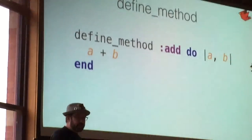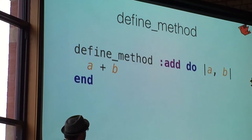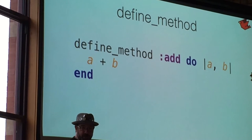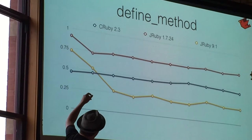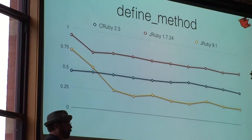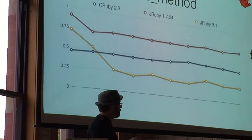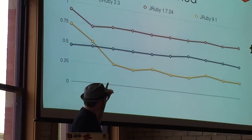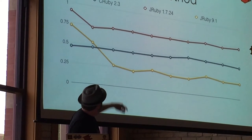So the define_method, another fairly common pattern. Lots and lots of use in Rails and other frameworks. It can be hard to optimize. Even CRuby still has some trouble with this. We wanted to improve the situation. Here is the performance that we get with a very simple optimization. So actually here at JRuby 1.7, the red line is now slower than CRuby. So this is something we've always wanted to improve.